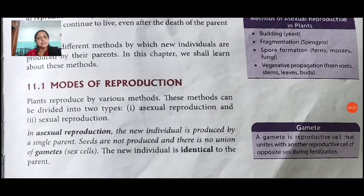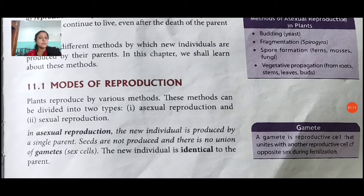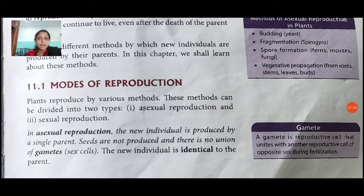The two types are asexual reproduction and sexual reproduction. In asexual reproduction, a new individual is produced by a single parent. Seeds are not produced and there is no union of gametes. The new individual is identical to the parent. In asexual reproduction, there is no need for two parents — only a single parent can reproduce.